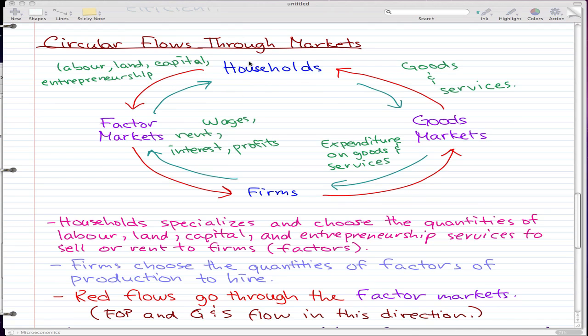So we, the households, the people who actually work for firms, we will provide all our skills and experiences, and we will list them on this factor market. And the firms will pretty much interview or pick the people with the skills and experience that they need, and they will interview them and hire the right people from the factor markets.